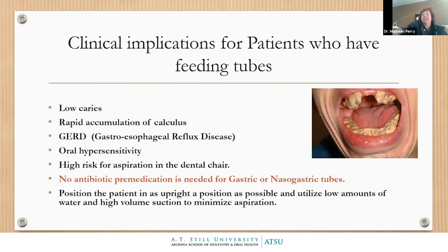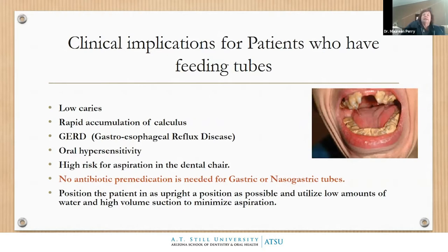Here you can see a typical case — a collapsed upper arch, missing anterior teeth, and tons of what I call 'popcorn calculus' because of its color and appearance. This is from a patient with a feeding tube. The calculus builds up rapidly because they're not swallowing and don't have the mechanical action of eating to break up pellicle. They won't get caries because there are no fermentable carbohydrates.